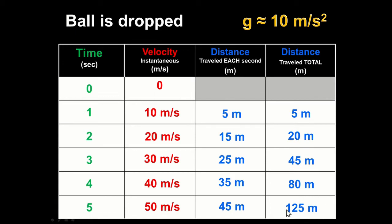Instead of finding distance each second individually, let's do it for all five seconds at once. What was the average velocity for all five seconds? We started at zero and ended at 50, so we averaged 25 meters per second for five seconds — and 25 times 5 is 125. Same answer.